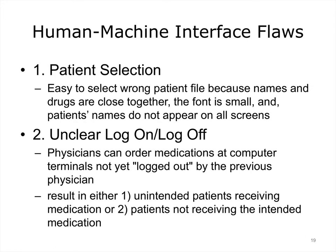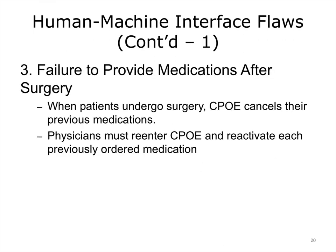As is the case with other clinical information systems, CPOE systems suffer from a range of usability problems. We will now look at three kinds of problems. First, when selecting a patient, it is relatively easy to select the wrong patient because names and drugs are close together, the font is small, and patients' names do not appear on all screens. Second, physicians can order medications at computer terminals not yet logged out by previous physicians, resulting in either unintended patients receiving medication or patients not receiving the intended medication. Third, when patients undergo surgery, the CPOE system cancels their previous medications, and physicians must re-enter CPOE and reactivate each previously ordered medication. A reminder to do so may serve to reduce the frequency of such mistakes.